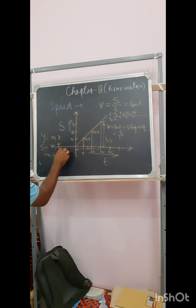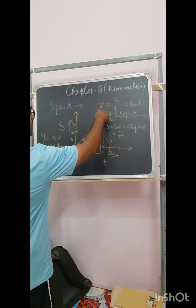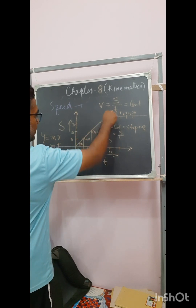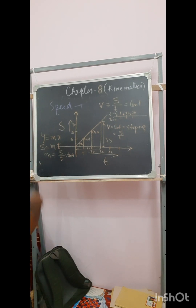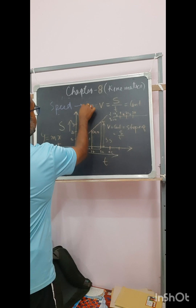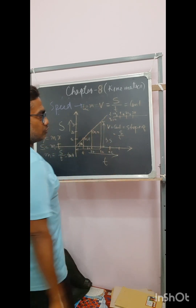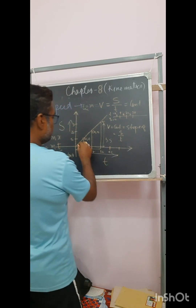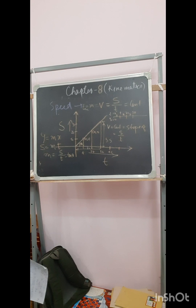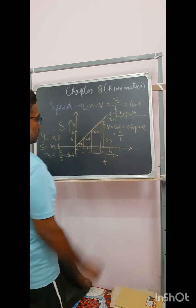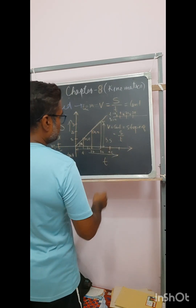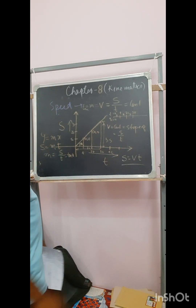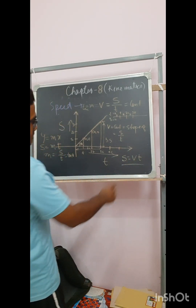So m here equals tan θ, meaning v denotes the slope of that line, which is s by t. Since s by t is constant, v is constant. This line is a linear line, confirming that for uniform velocity, v is constant and equal to s by t. From here I can say that for uniform velocity, s = vt, where s is the distance and t is the time.